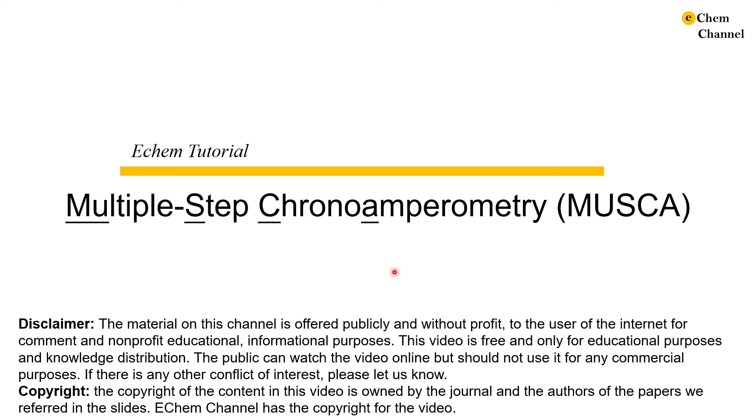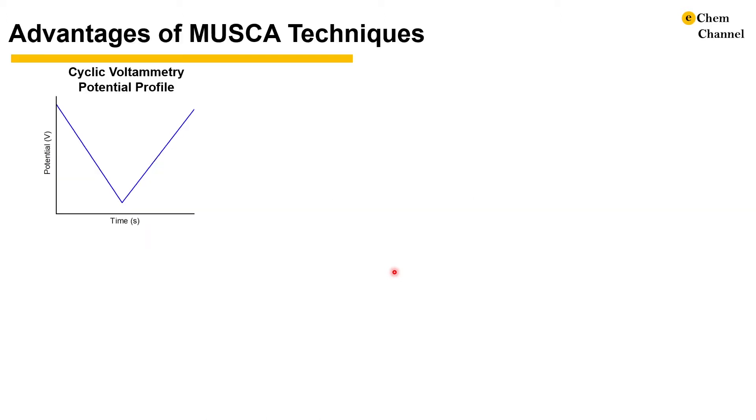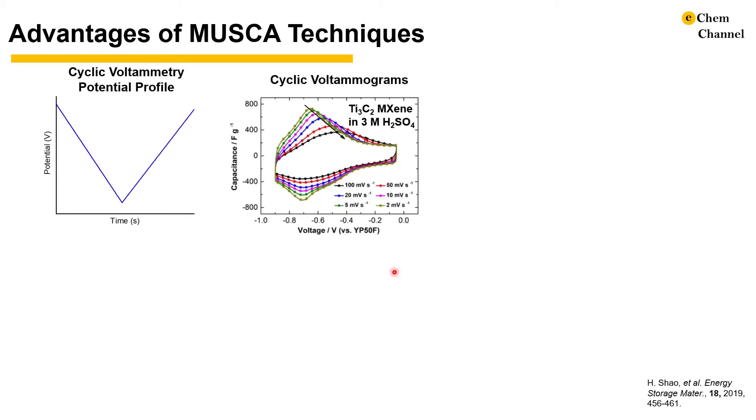We are going to explain its advantages, experimental setup, and data processing. Cyclic voltammetry is a common analytical technique to characterize the electrochemical behavior of materials. Here is a typical potential profile that shows a complete cathodic and anodic cycle, and normalized cyclic voltammograms at various sweep rates for Ti3C2-Maxine in 3-molar sulfuric acid.